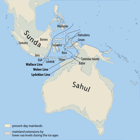All of Sundaland is within the tropics; the equator runs through central Sumatra and Borneo. Like elsewhere in the tropics, rainfall rather than temperature is the major determinant of regional variation. Most of Sundaland is classified as perhumid, or everwet, with over 2,000 millimeters of rain annually.